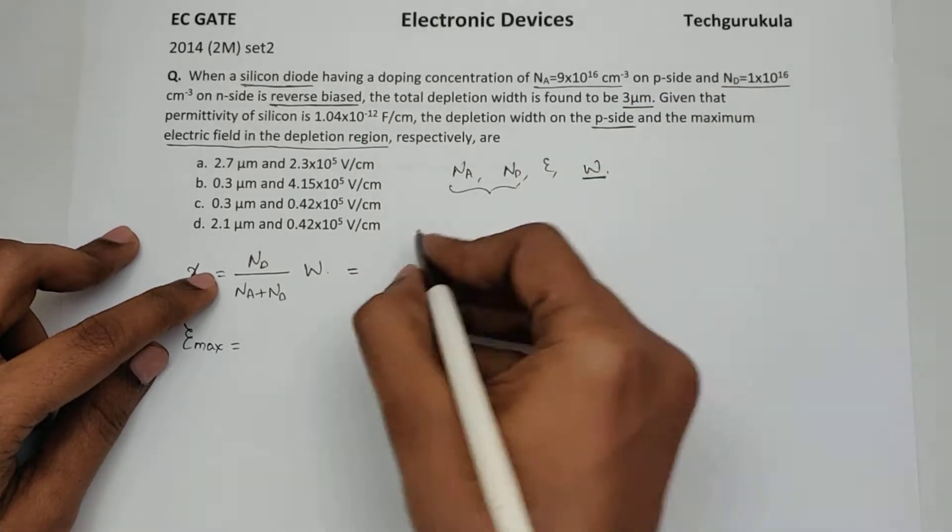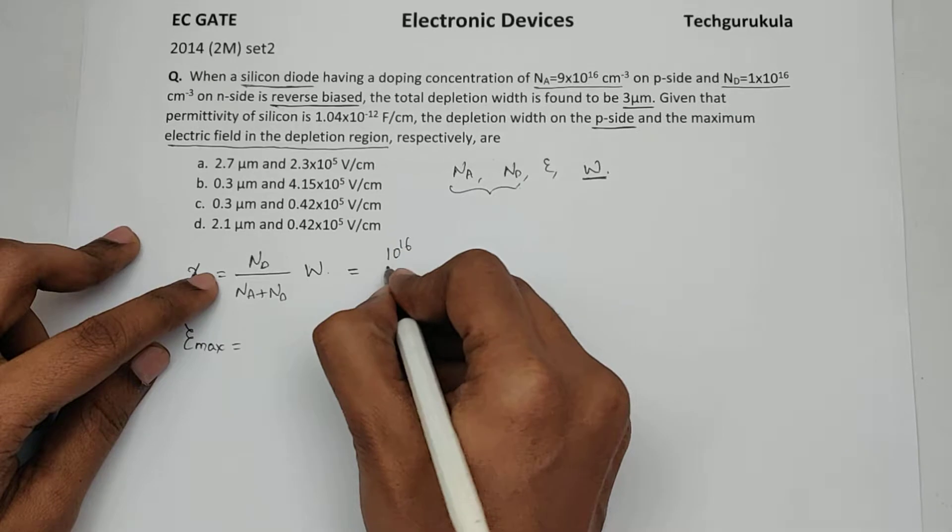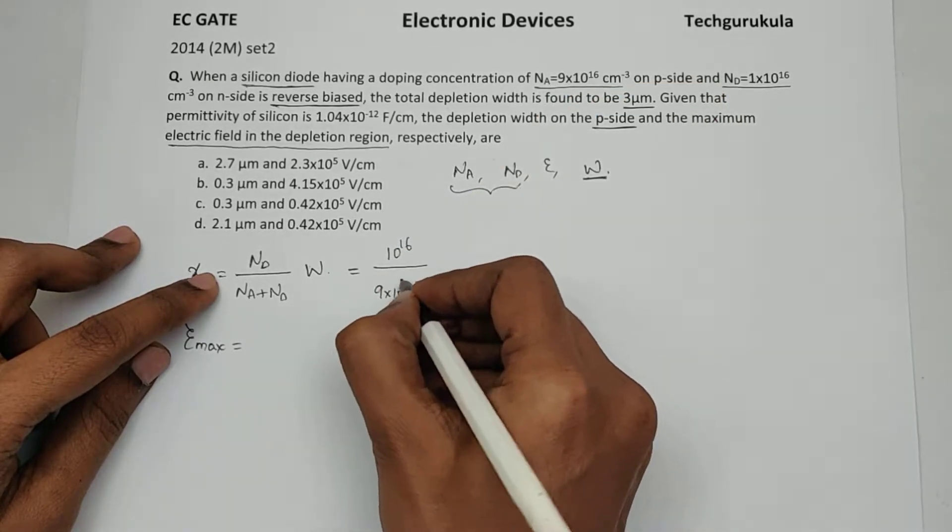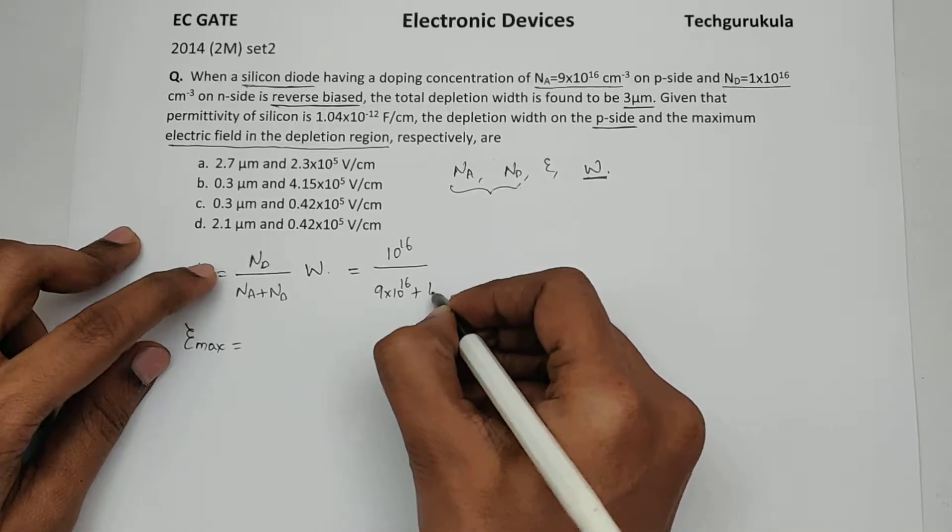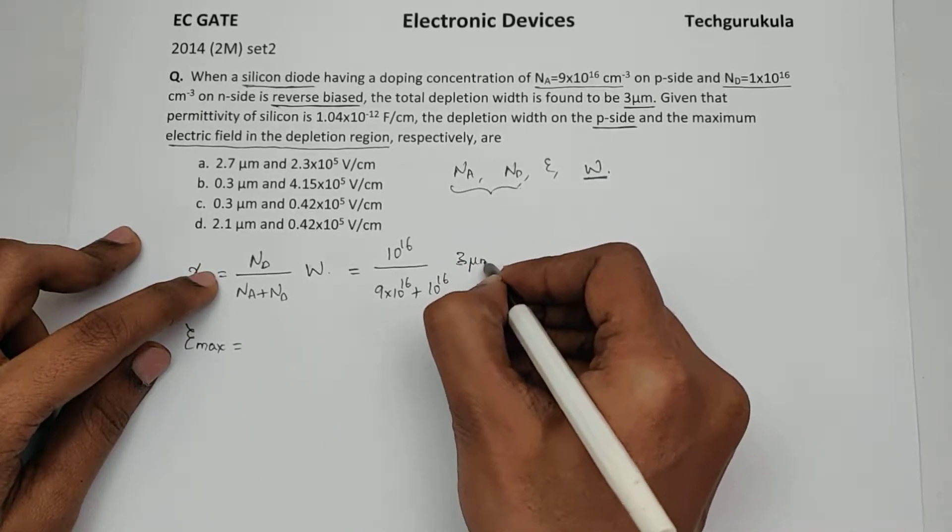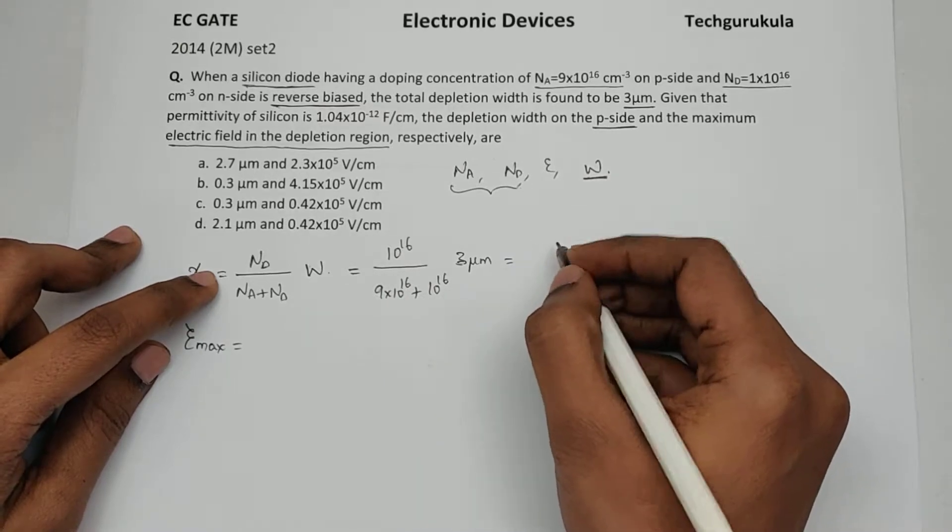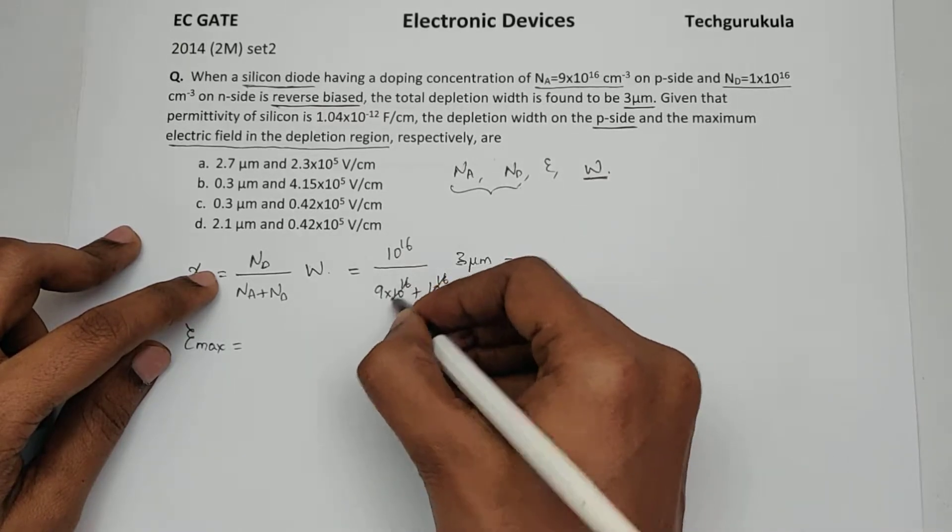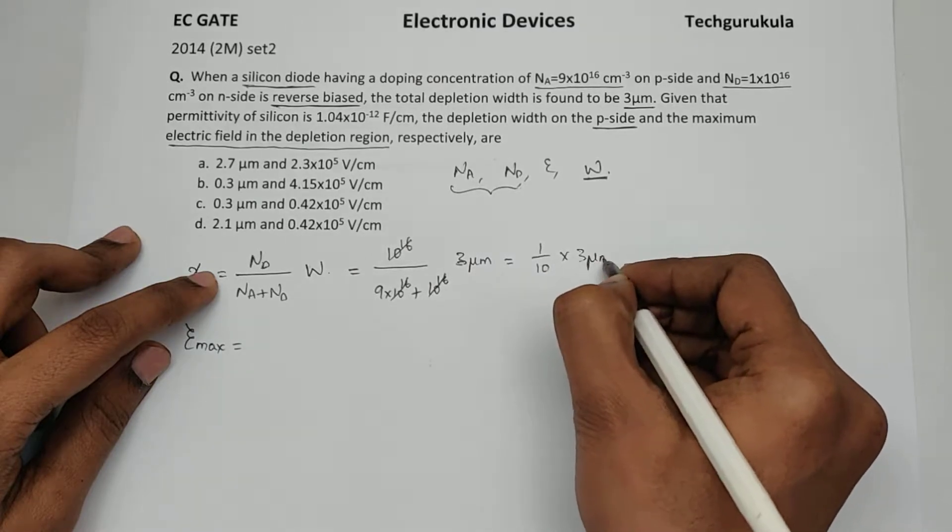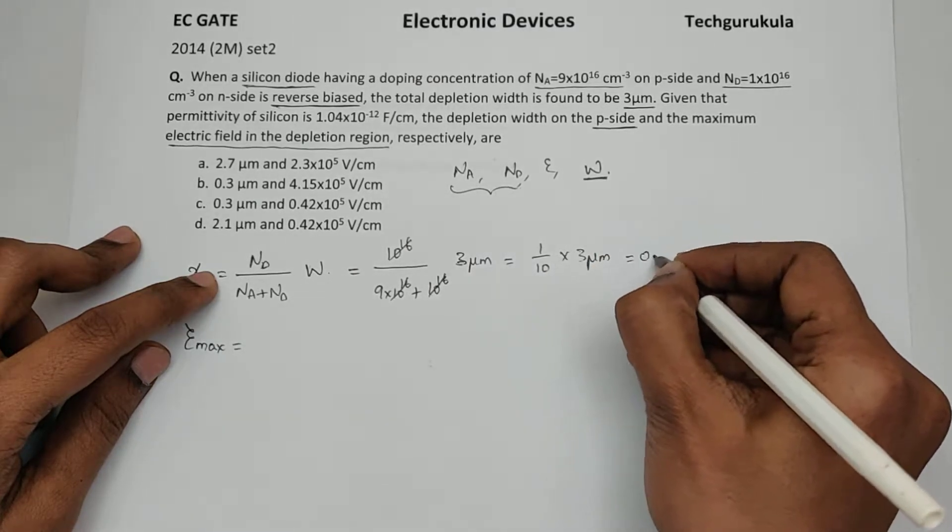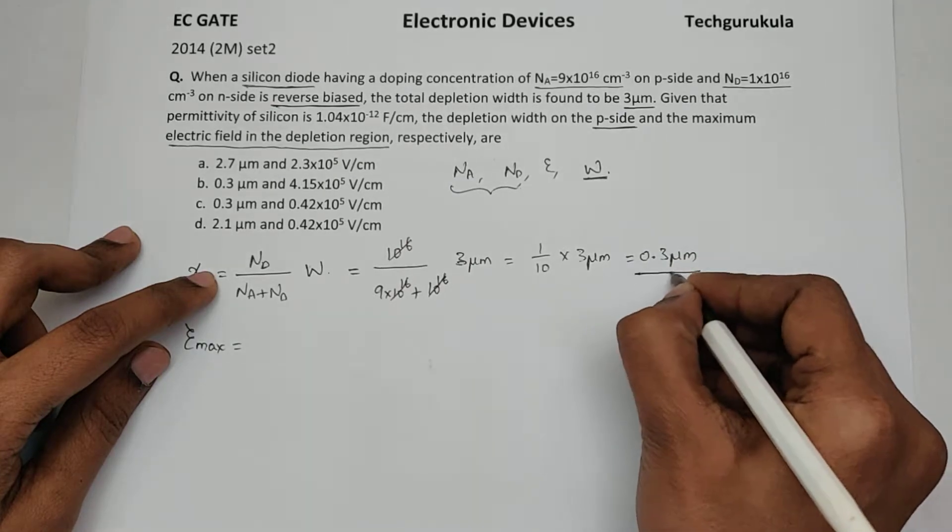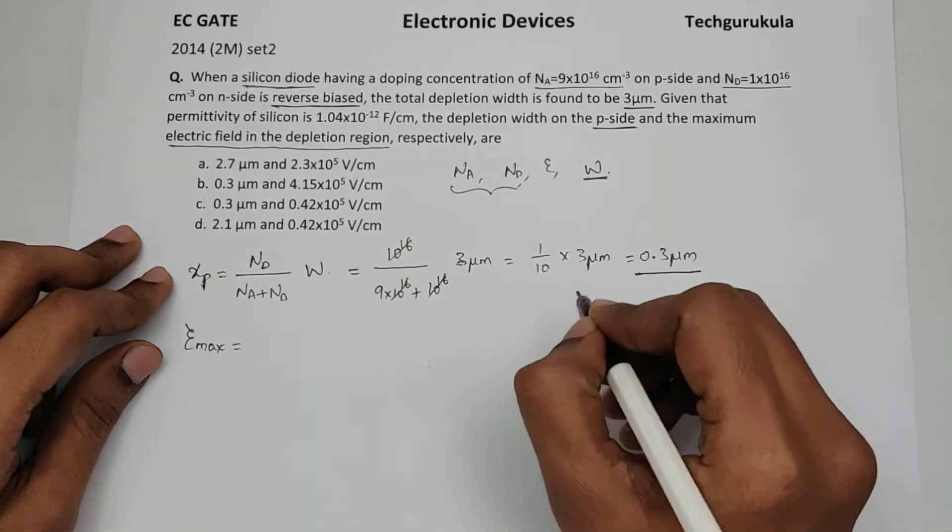Nd is 1 times 10 power 16, so 10 power 16 over Na is 9 times 10 power 16 plus Nd is 10 power 16 times W, this is 3 micrometer equals 10 power 16 is cancel. So 1 over 10 times 3 micrometer, which is equal to 0.3 micrometer. So depletion width on the P side is 0.3 micrometers.